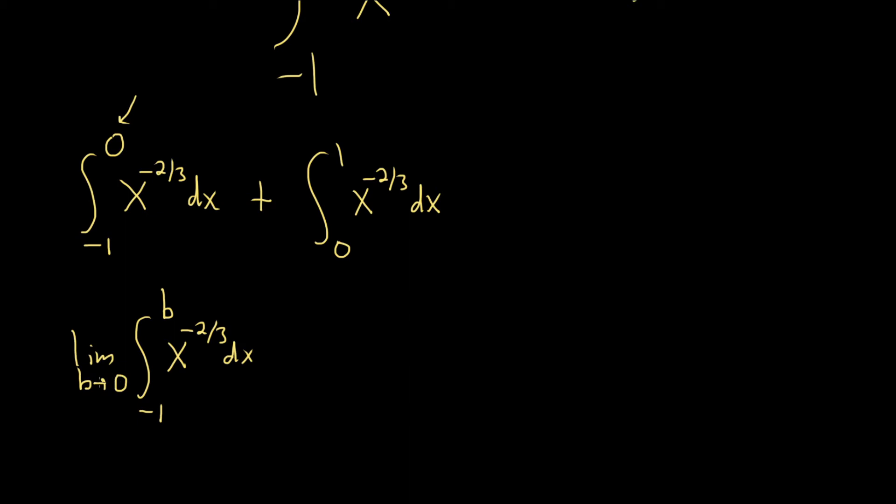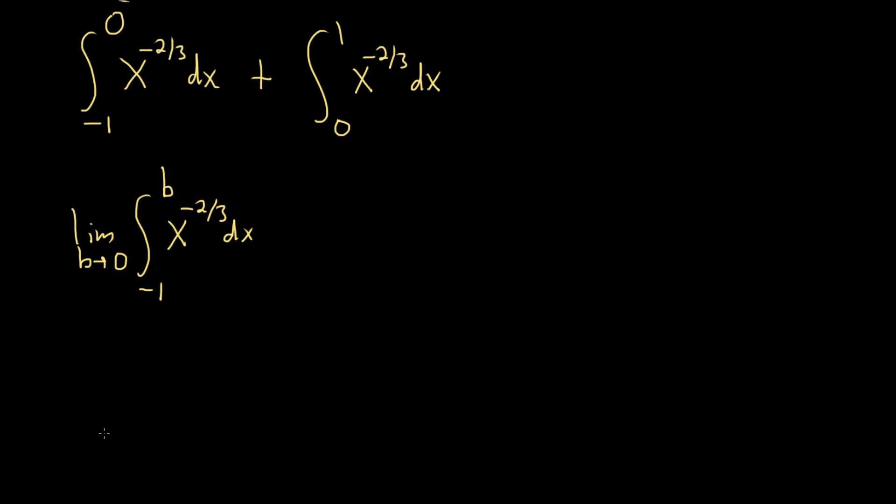Now the important part is to figure out which way it's approaching from. So what I like to do to figure this out is draw a little picture. So here is negative 1 and here is 0, right? And b is right here and b is approaching 0. So it's approaching from the left, you see. If you draw a picture, the picture will give you the direction.